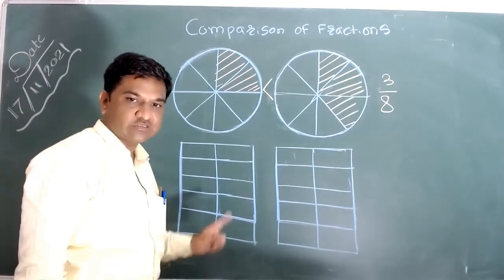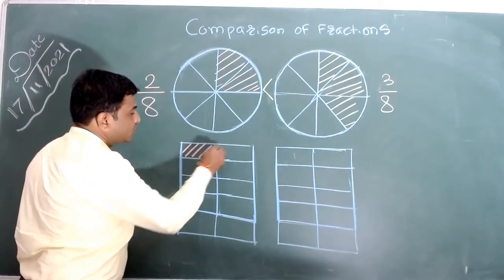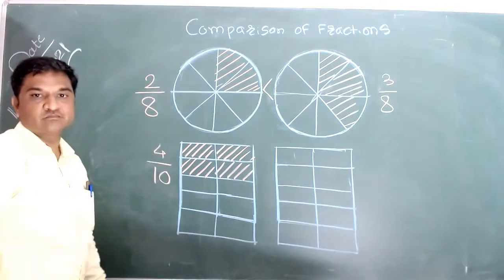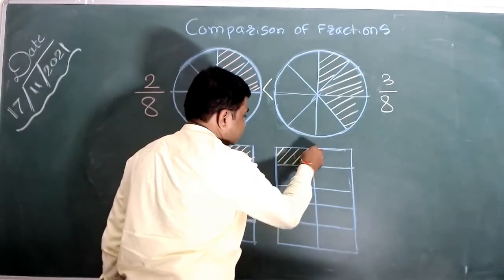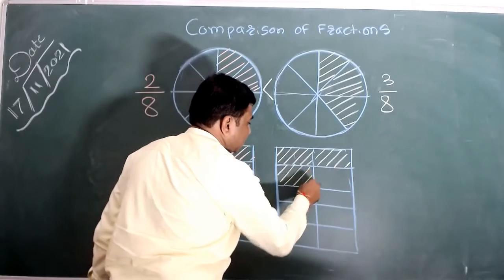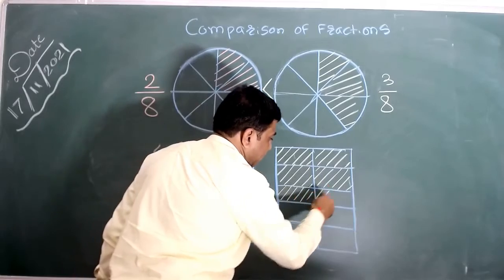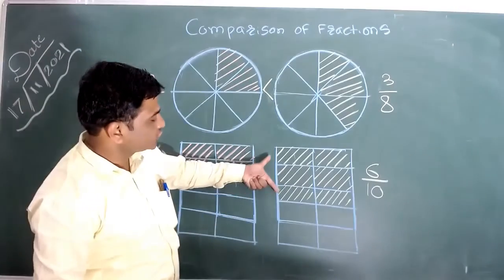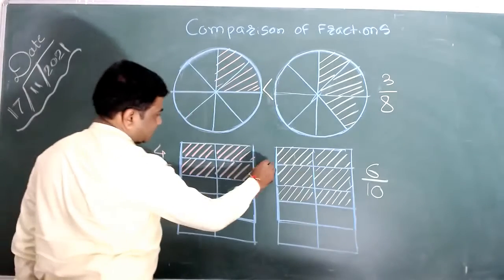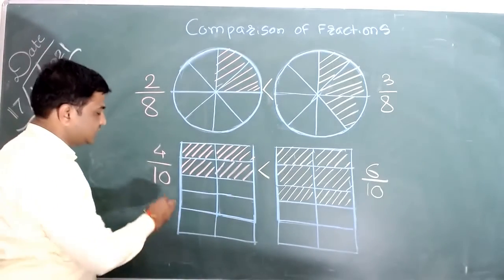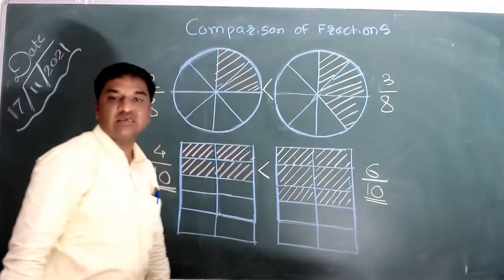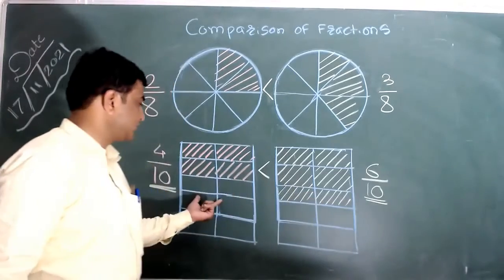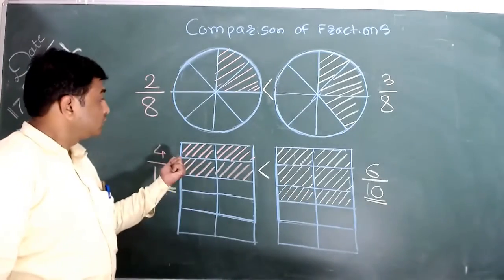Let's take another example. We'll take a rectangle which is divided into 10 equal parts. If I shade 4 parts of this first rectangle, then the fraction of the shaded portion will be 4 out of 10. We can see that the shaded portion of the second rectangle is more, so 6 by 10 is greater than 4 by 10. You can see that the denominator of both fractions is equal, so they are like fractions — the figure is divided into an equal number of 10 parts each. Comparison of like fractions is very easy.